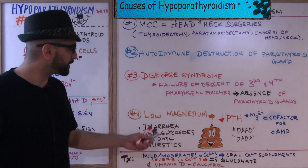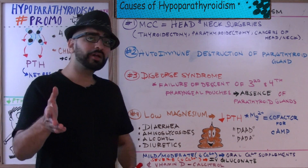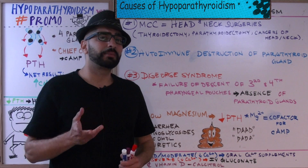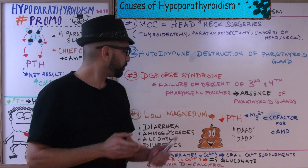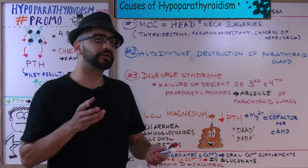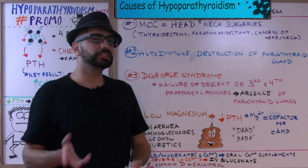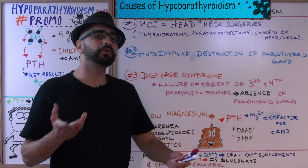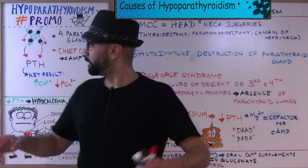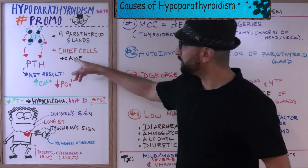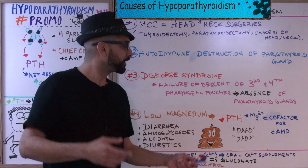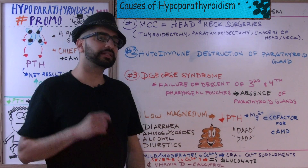Lastly, low magnesium levels can cause hypoparathyroidism. We mentioned this when we first introduced PTH — low magnesium leads to low PTH, which leads to low calcium. Why do we need magnesium? Magnesium is a cofactor for cyclic AMP. Without cyclic AMP, you won't get activation of the parathyroid hormone. Keep that very important fact in mind.